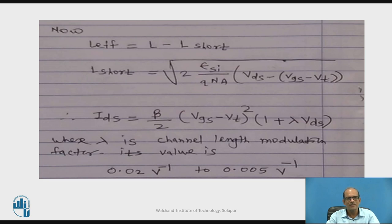This is given by the equation IDS equals beta by 2 in the bracket VGS minus VT square times another bracket 1 plus lambda times VDS. The original equation is beta by 2 in the bracket VGS minus VT square, that is in the saturation region. Due to short channel effect, the second bracket 1 plus lambda times VDS is added.